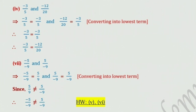Fourth pair: minus 3 upon 5 and minus 12 upon 20. Minus 3 upon 5 equals minus 3 upon 5. And minus 12 upon 20 equals minus 3 upon 5 — divide numerator and denominator by 4. Therefore, minus 3 upon 5 is equal to minus 12 upon 20. Fifth pair: minus 5 upon minus 9 and 5 upon minus 9. Minus 5 upon minus 9 equals 5 upon 9 — cancel the minus-minus sign. But 5 upon minus 9 is not equal to 5 upon 9. Therefore, minus 5 upon minus 9 is not equal to 5 upon minus 9.